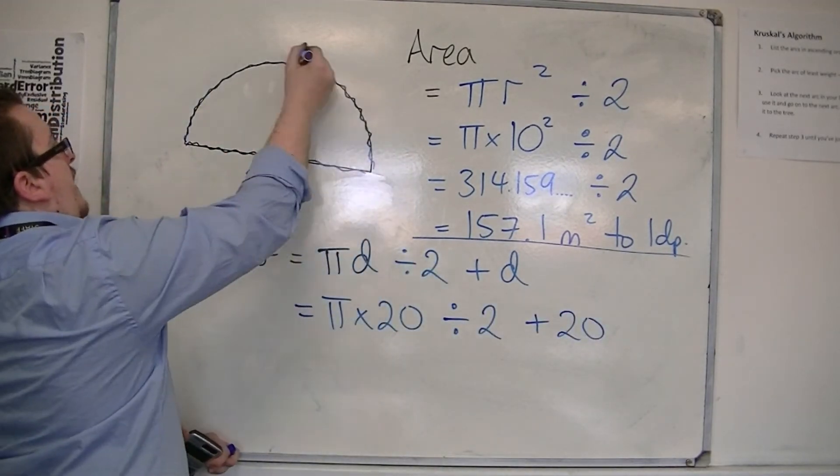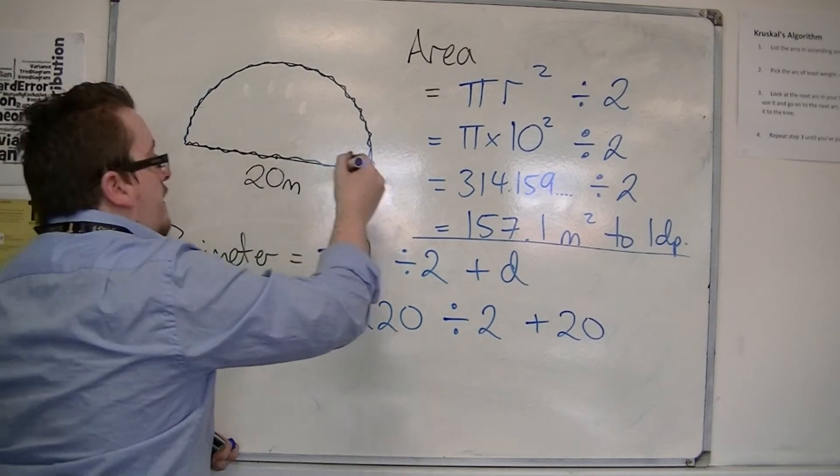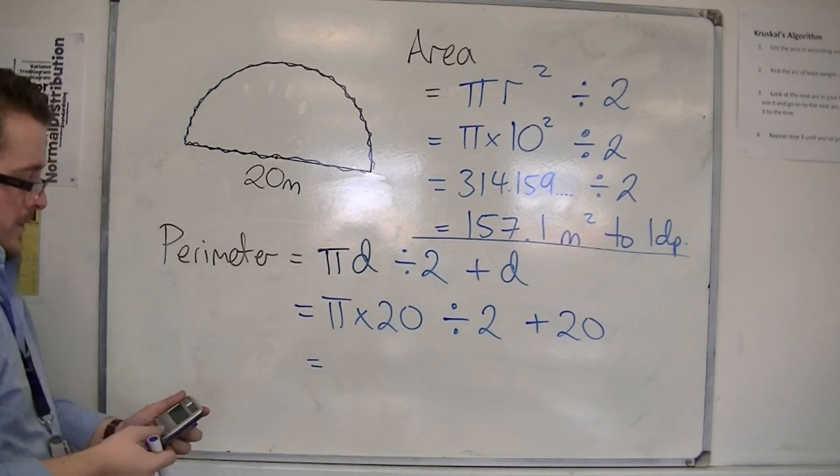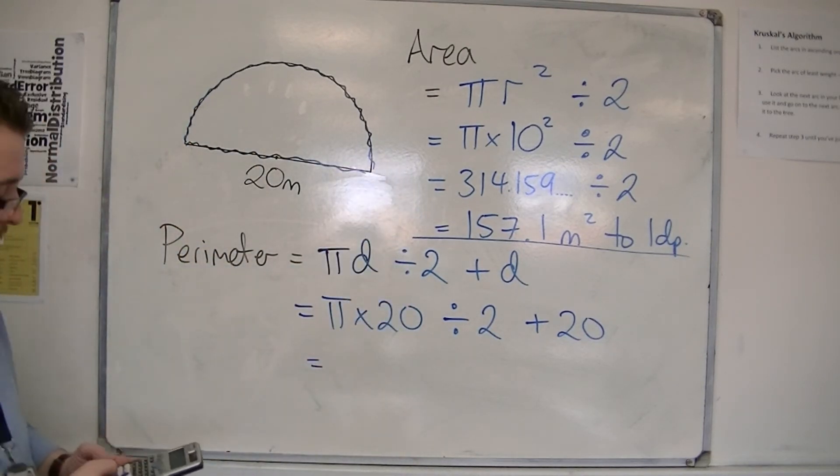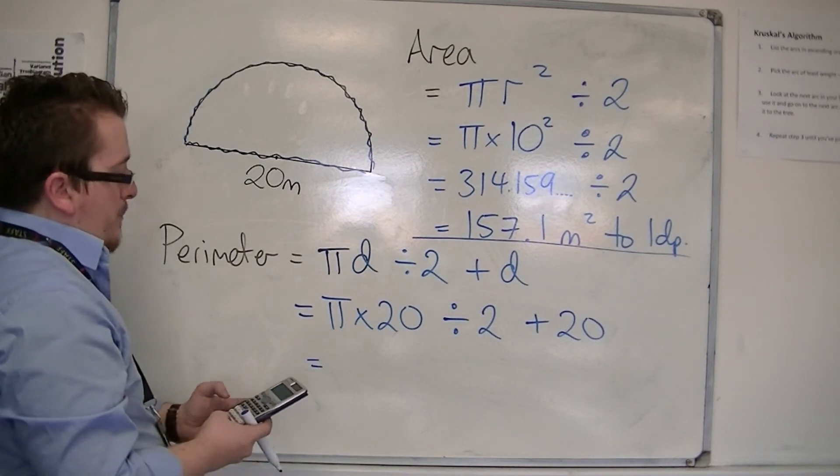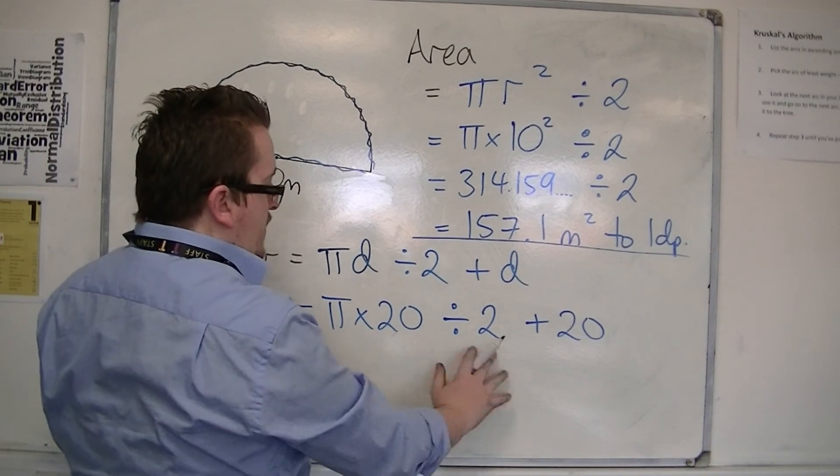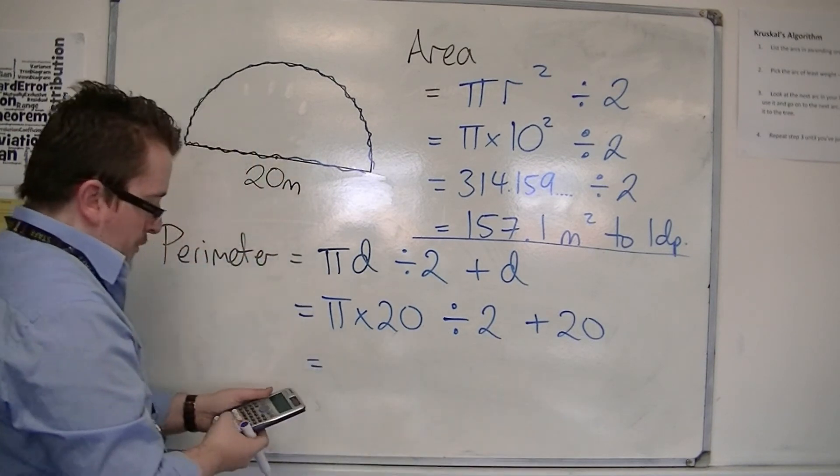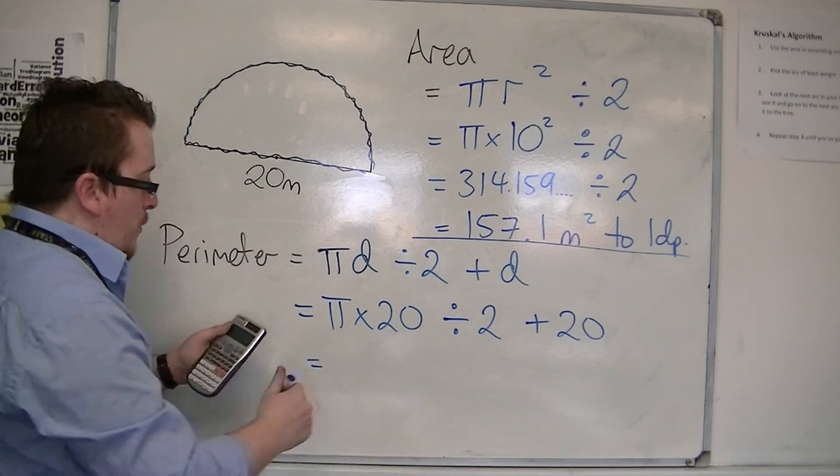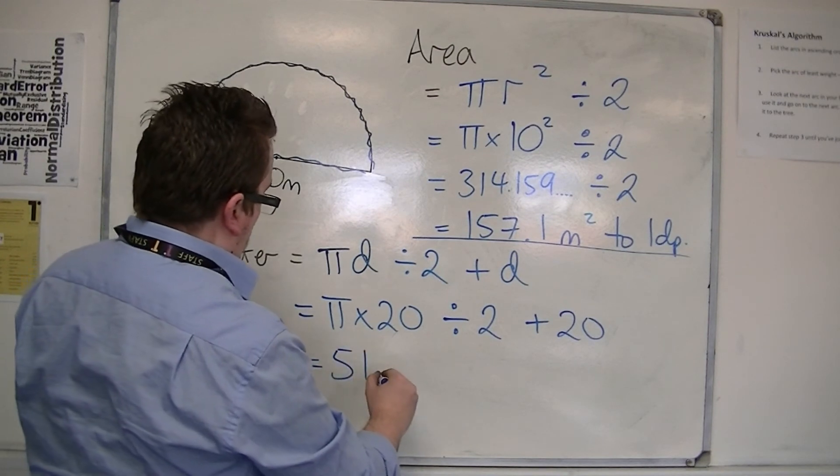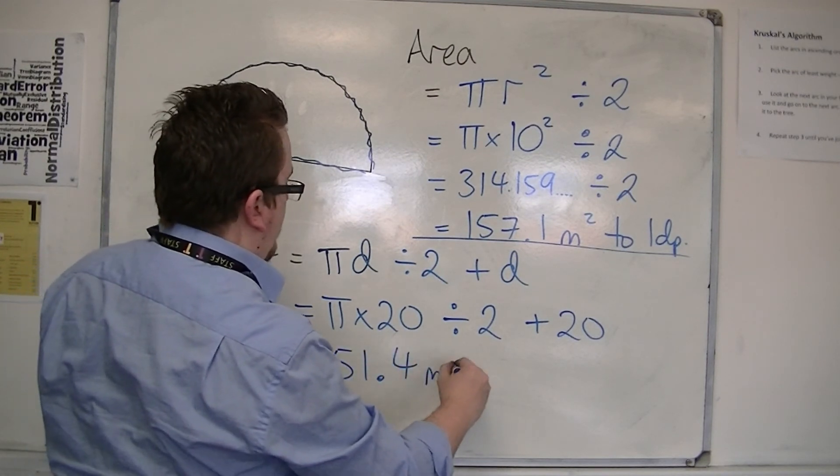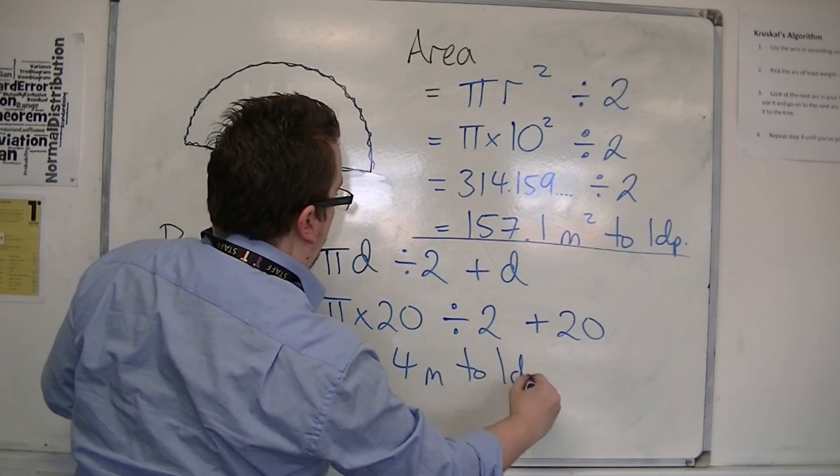So that's the half circle, then I've got the diameter of the circle. So I've got pi times 20, then divide that by 2. You should get 31.4159 for that bit. Add on 20, so all together we have 51.4 metres to one decimal place.